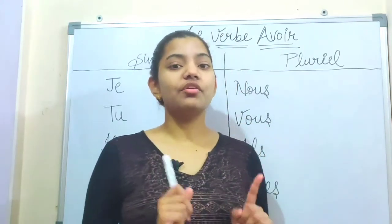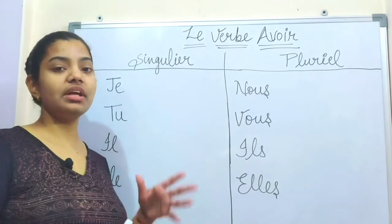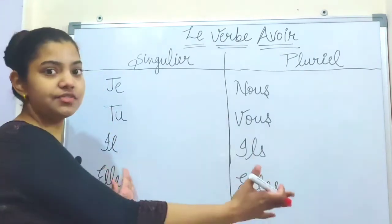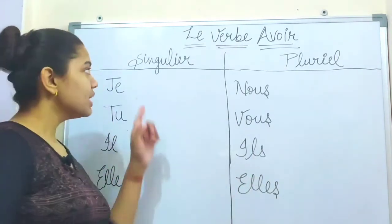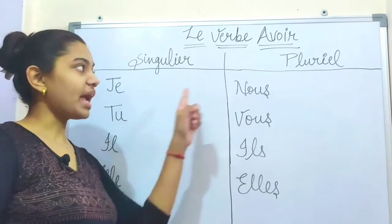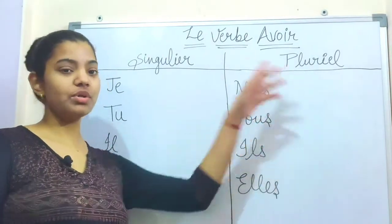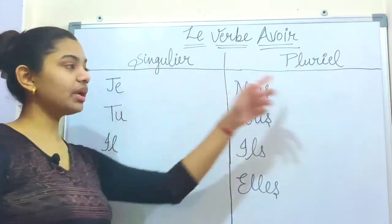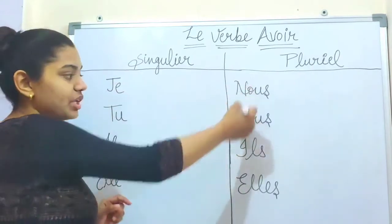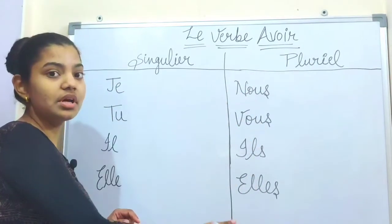So we start the verb. Now we have this form. This is singulier and this is pluriel — which is singular and plural. These are the subject pronouns.